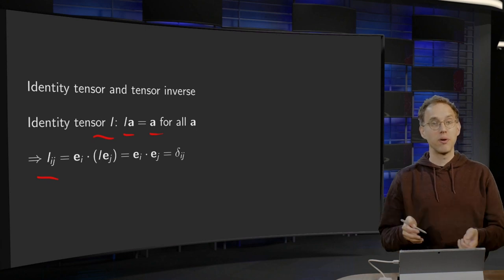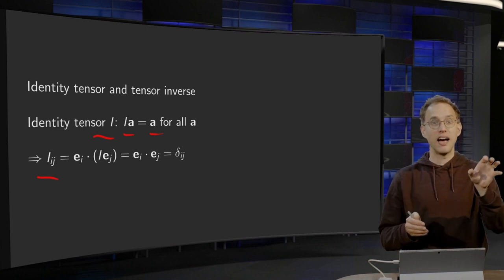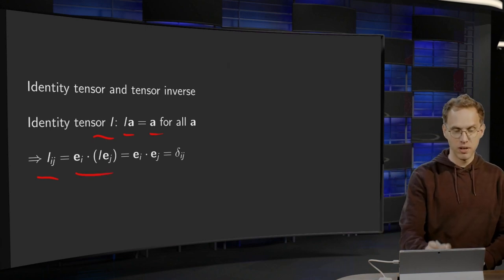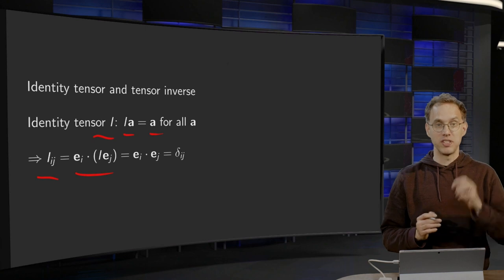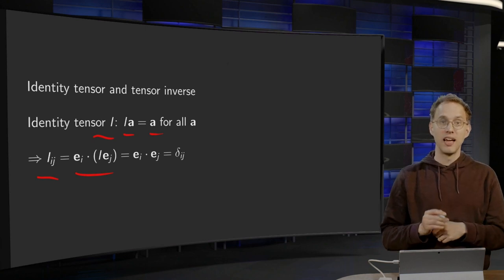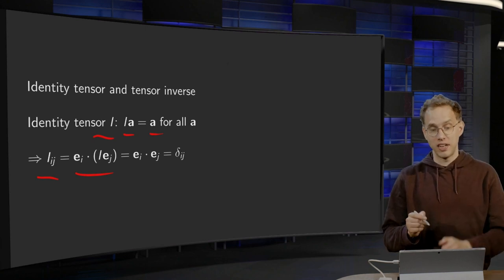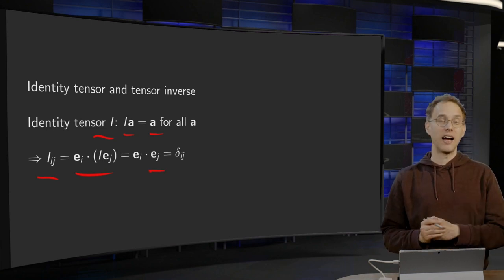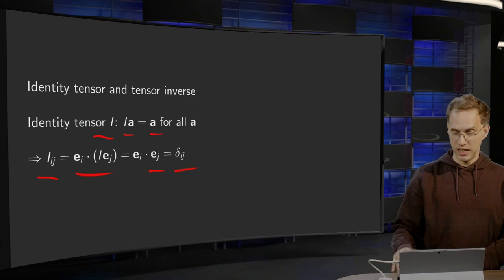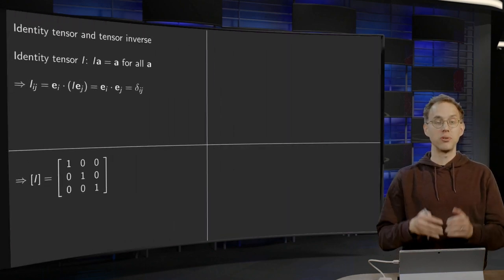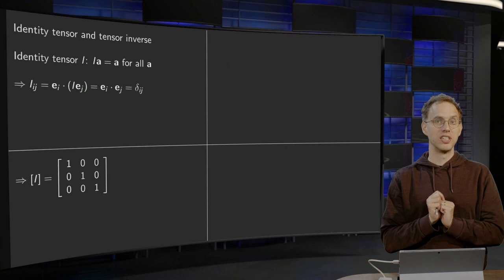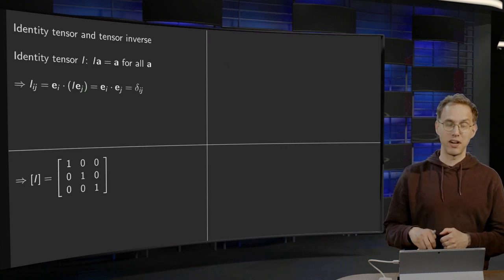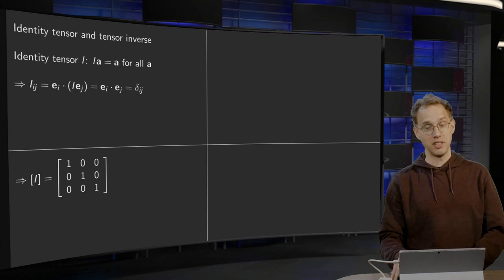if you want to know the components, compute e_i in a product with the tensor times e_j. e_i in a product with I times e_j - well, the identity just leaves e_j where it is. And e_i in a product with e_j gives you delta_ij. So if you write this as a matrix, you just get the identity matrix. That goes very fast, exactly the same as what happens in linear algebra.